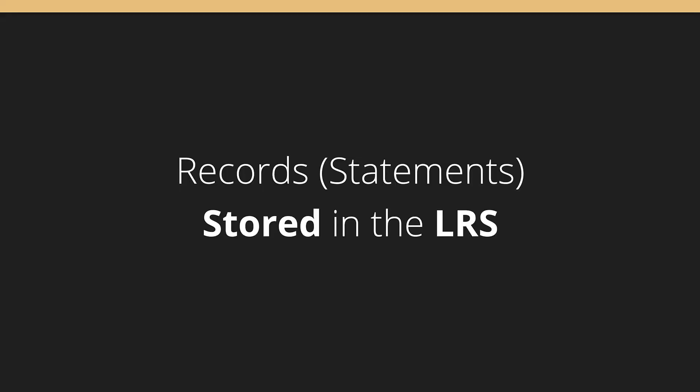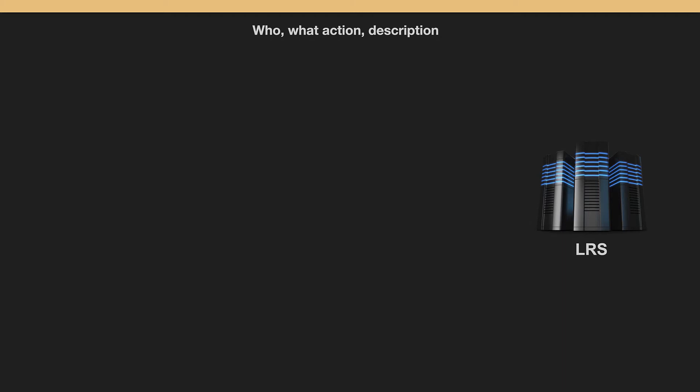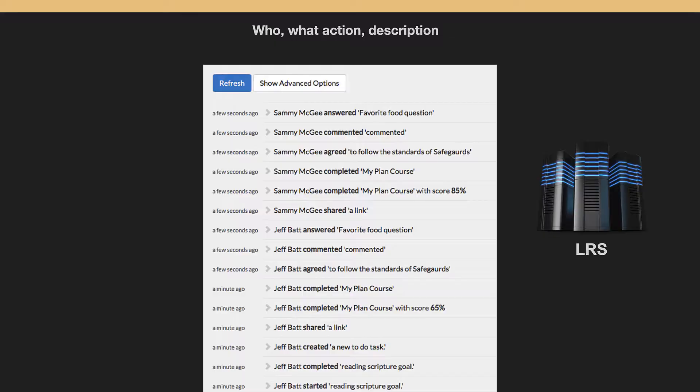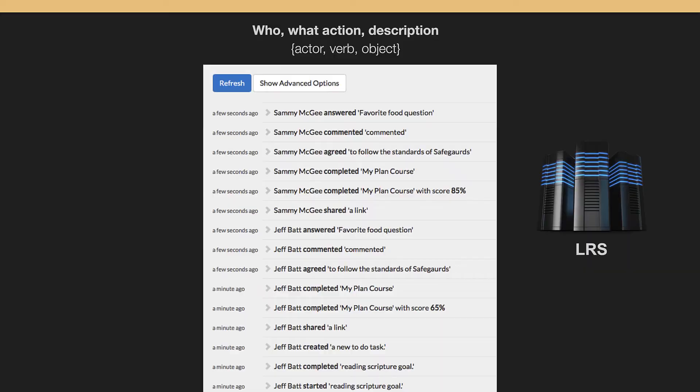Learning record stores allow you to store this information, and this record is in a format called JSON. There's a learning record that stores all this information inside the learning record store. Inside the LRS, it has these statements that describe who did something, what action they did, and what the description is. It starts to show this feed of statements coming through — you can see who the person is, what action they did, and the description. You can click on each statement to get more information, metadata, and timestamps.